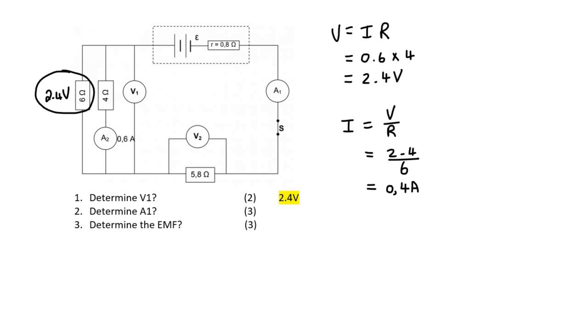So we have 0.6 amps flowing in this branch and we have 0.4 amps flowing through that branch, and so if we add them up we can then say that A1 will be equal to 0.6 plus 0.4, and so that will be 1 amp.